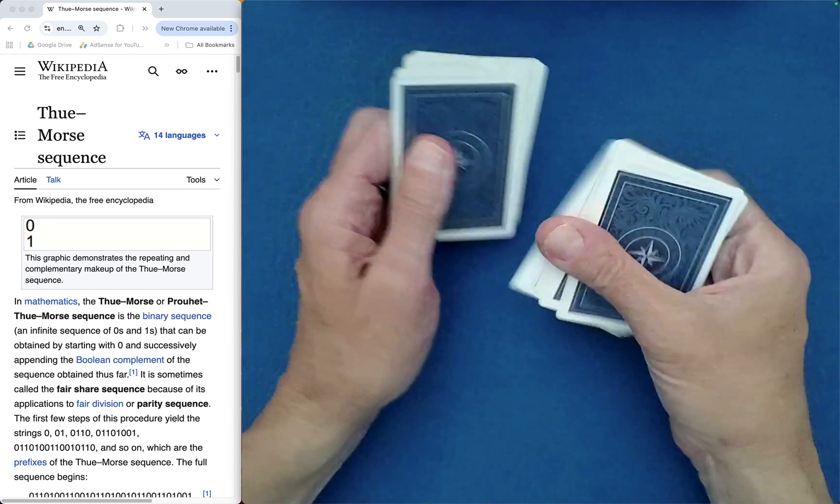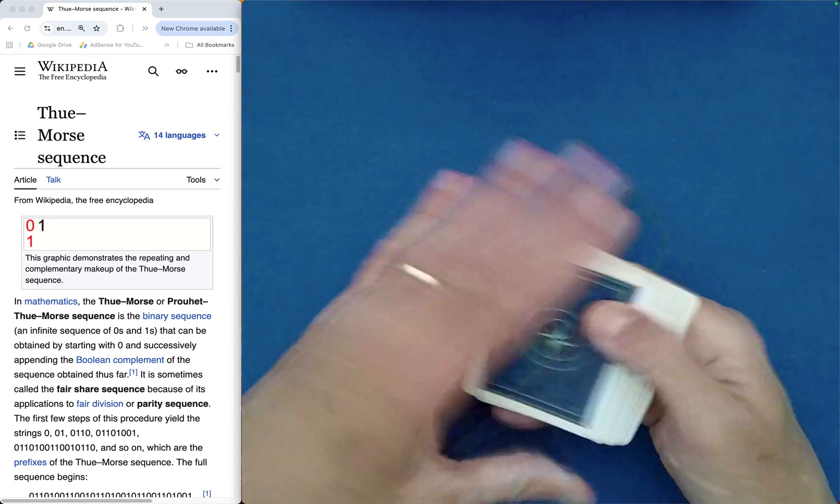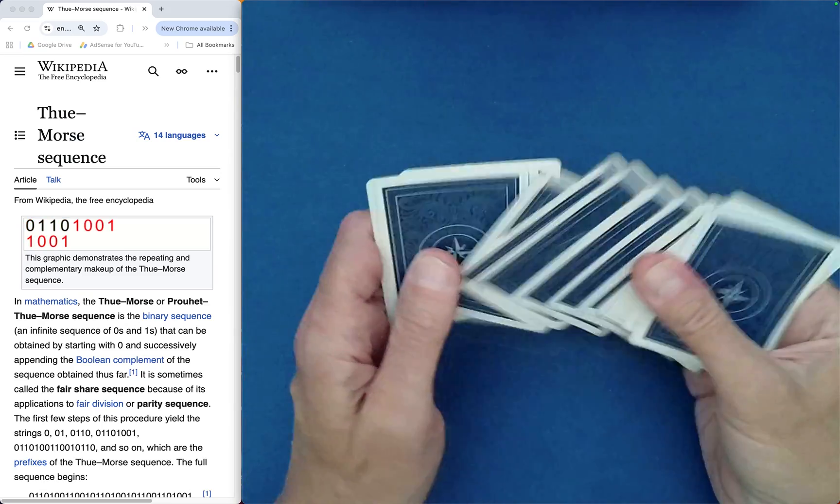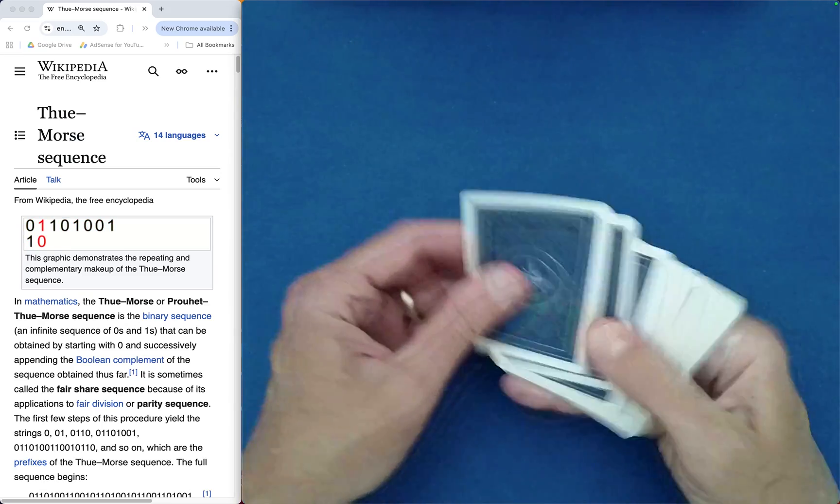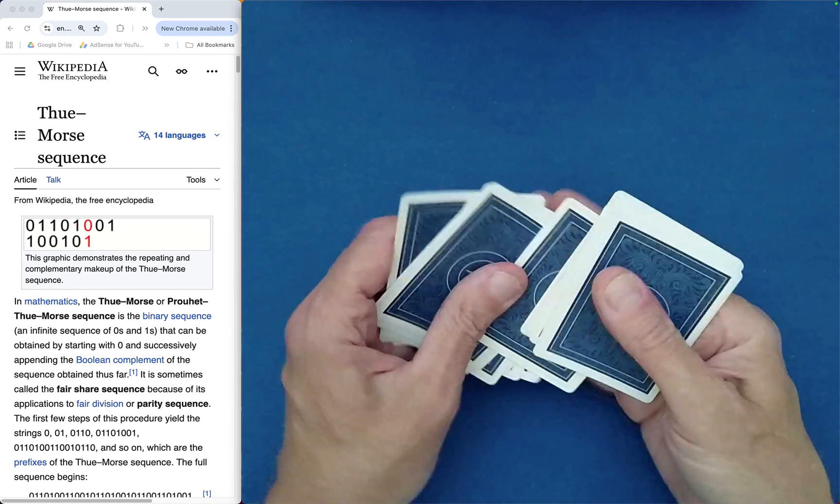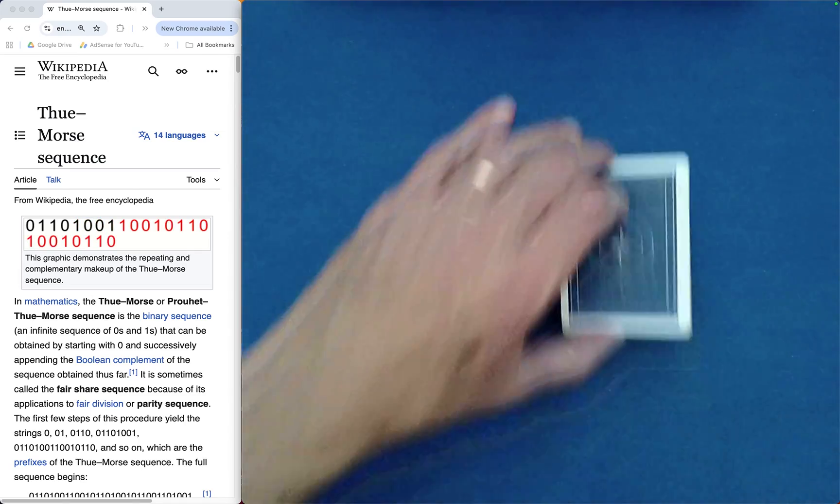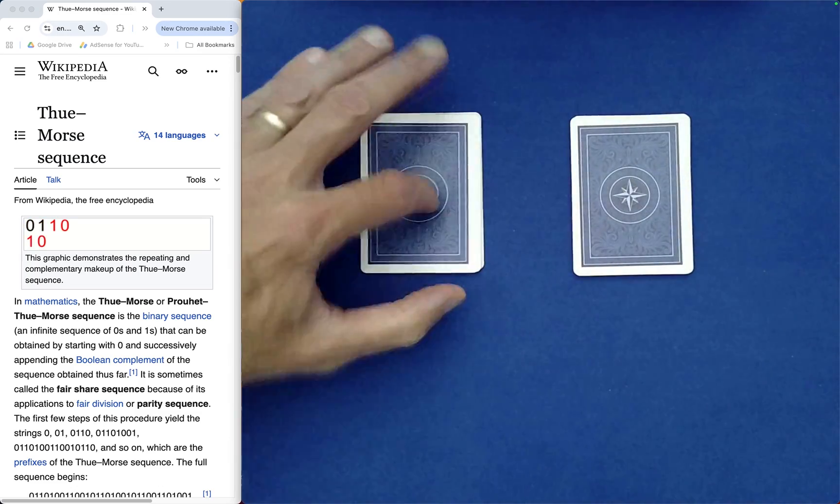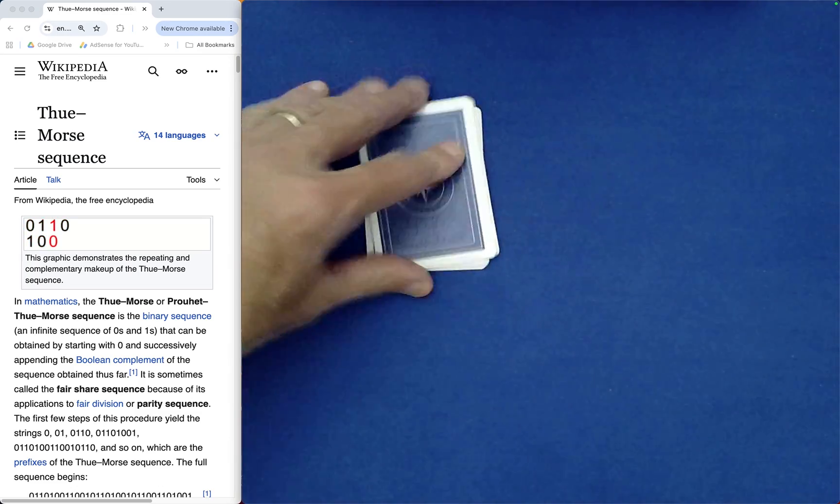Now I'm going to perform something called the Charlier Shuffle, and if you haven't seen this before, I'll add a link in the description below. It's a great one to learn, actually. It's very convincing, and it's equivalent to just an ordinary packet cut. And in fact, I would like you to freely cut the cards and complete the cut.